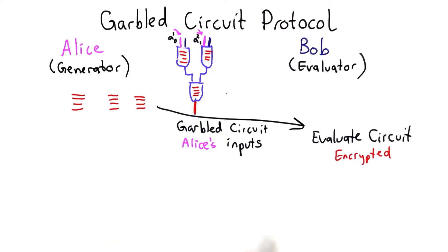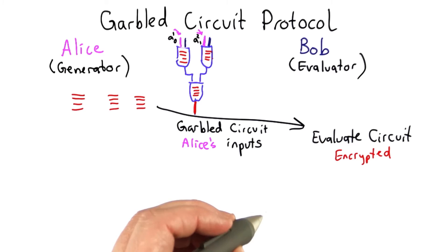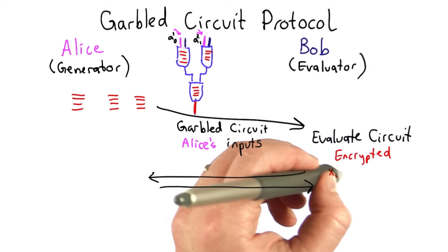Bob's going to evaluate the circuit using the garbled circuit protocol decrypting one entry from each of these. And at the end of this, Bob's going to get some output values.